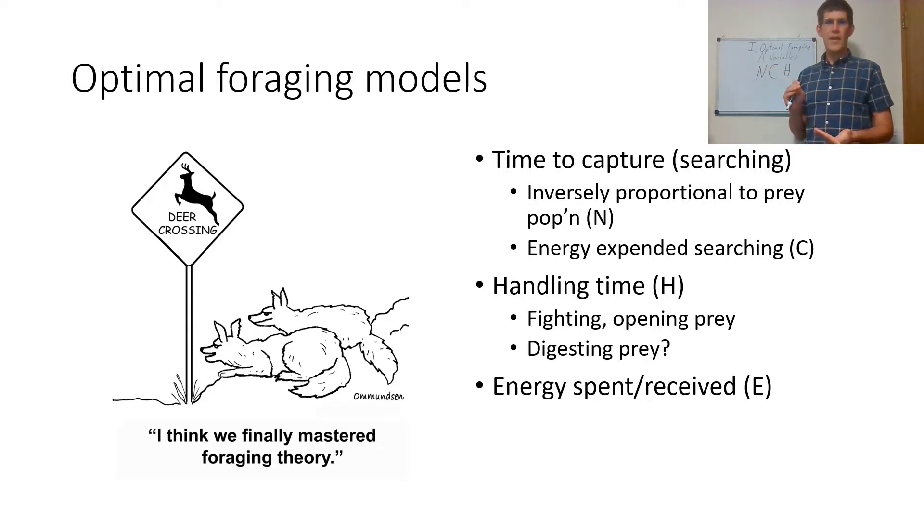You see these coyotes here, and they've finally mastered foraging theory by waiting near a deer crossing of a road. They have taken their handling time to zero because you do not have to fight a prey that has been hit by a Buick. Digesting prey could also be taken as a method of handling time if you consider that as time spent digesting prey when other prey cannot be captured, save for large ambush predators.